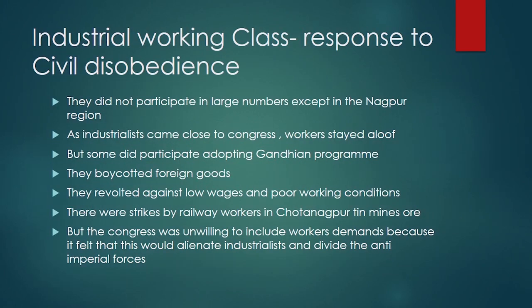Industrial working class response to Civil Disobedience: they did not participate in large numbers except in the Nagpur region, because the industrialists were largely aligned with Congress and the workers kept their distance. Some workers did participate in Gandhian programs. They opposed foreign goods, low wages, and poor working conditions, and participated in strikes such as the railway workers' strike in Nagpur. Congress was unwilling to include workers' demands because it felt this would alienate industrialists and divide the anti-imperial forces.